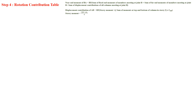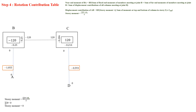The next step is to draw the rotation contribution table and find the near end moments and the moment due to displacement contribution of columns. For this, we calculate the near end moment and the moment due to displacement contribution, then find the story moment. Since sigma H equals 0, the story moment is 0. We compute M dash BA, M dash BC, M dash CB, M dash CD, M star AB, and M star DC.